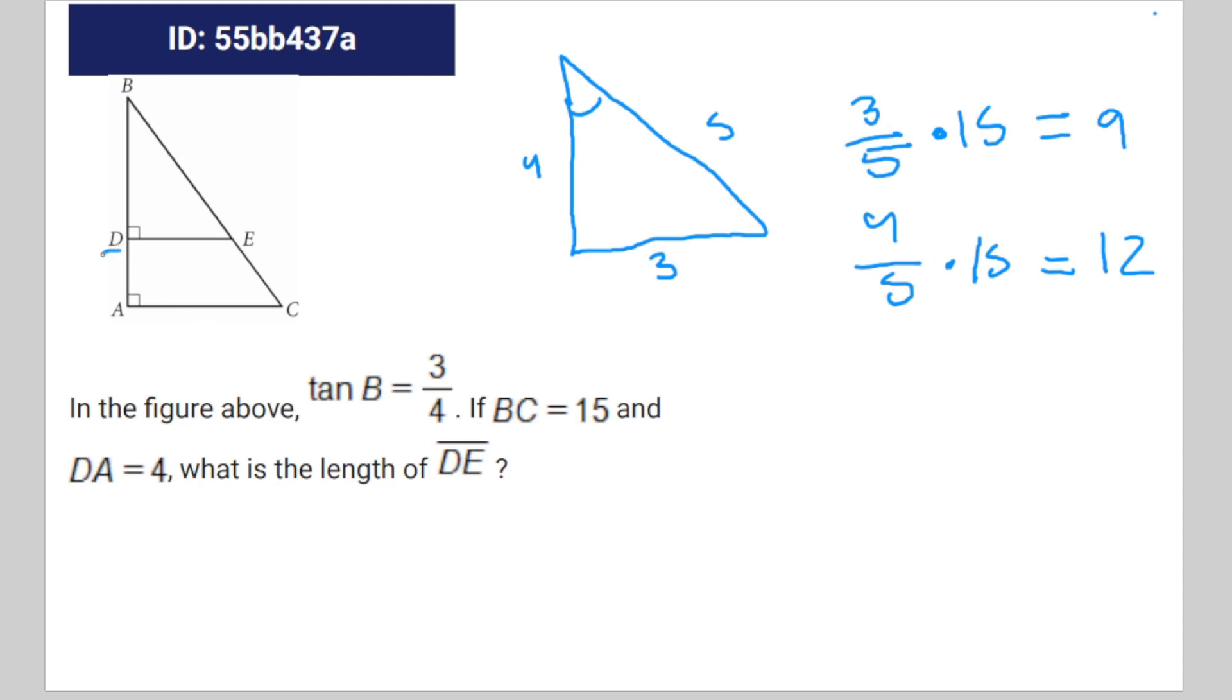So we're gonna fill this in: DA is equal to 4, BC is equal to 15, and AC is equal to 9, and the entirety of this is equal to 12.